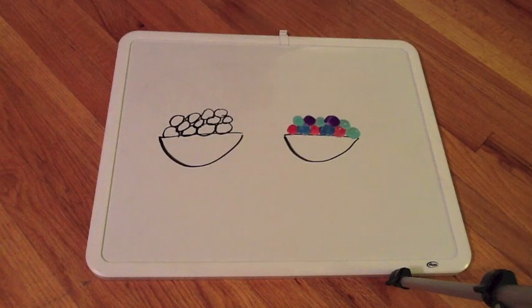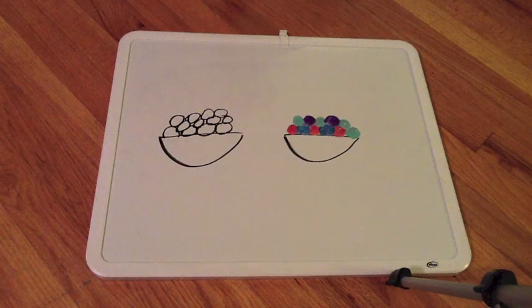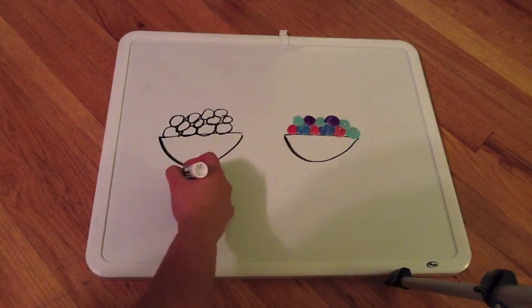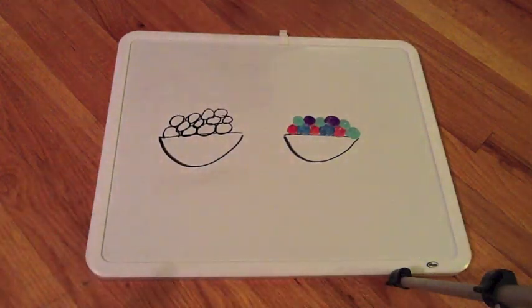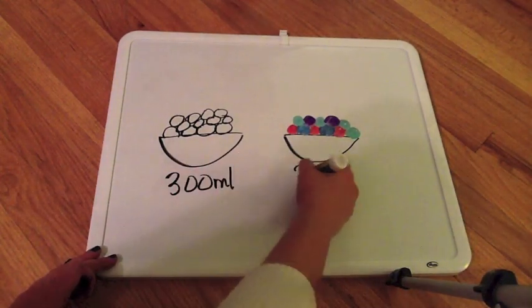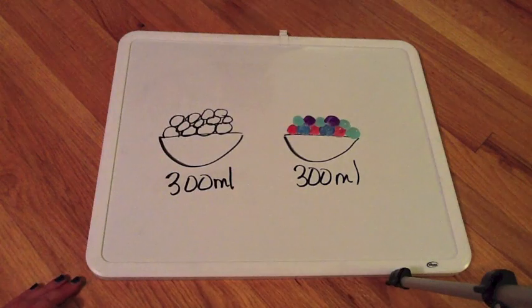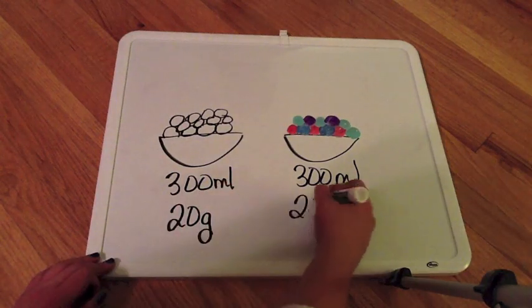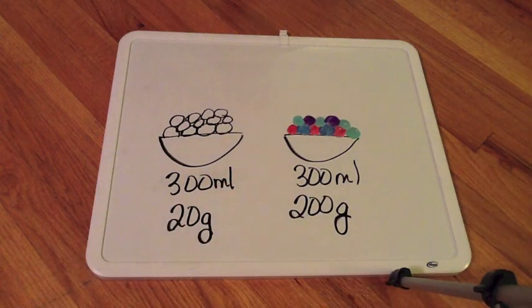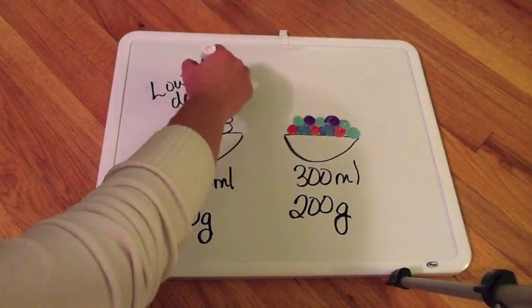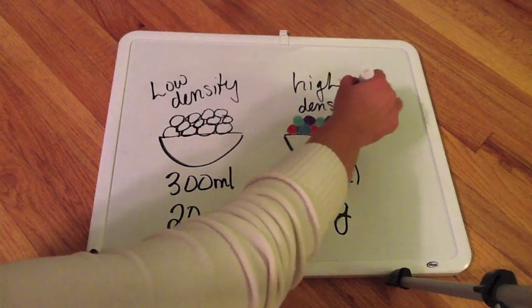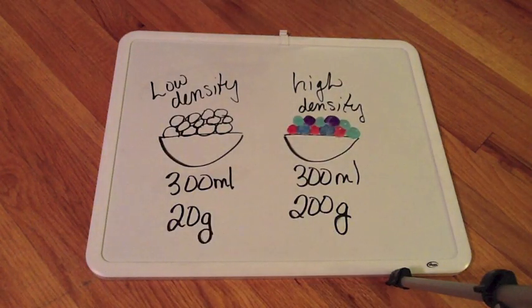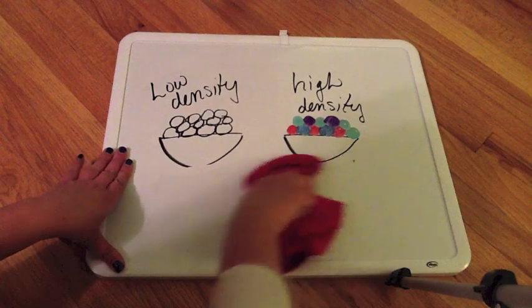So each bowl is going to hold 300 milliliters worth of material. So the volume is equal, but cotton balls are a lot lighter than gumballs. So the mass of the bowl of cotton balls is 20 grams and the gumballs is 200 grams. So that means the bowl with the cotton balls has low density and with the gumballs has high density. So if the volume is the same, the one with more mass has more density.